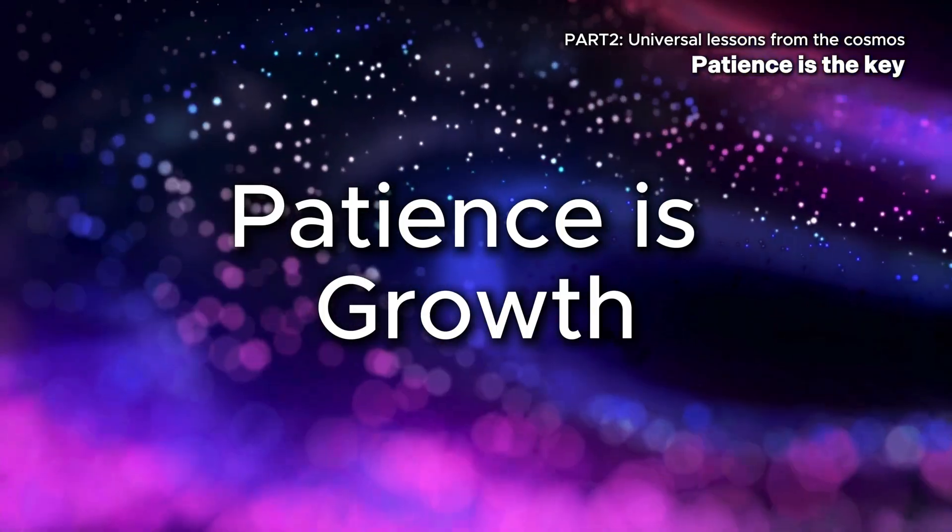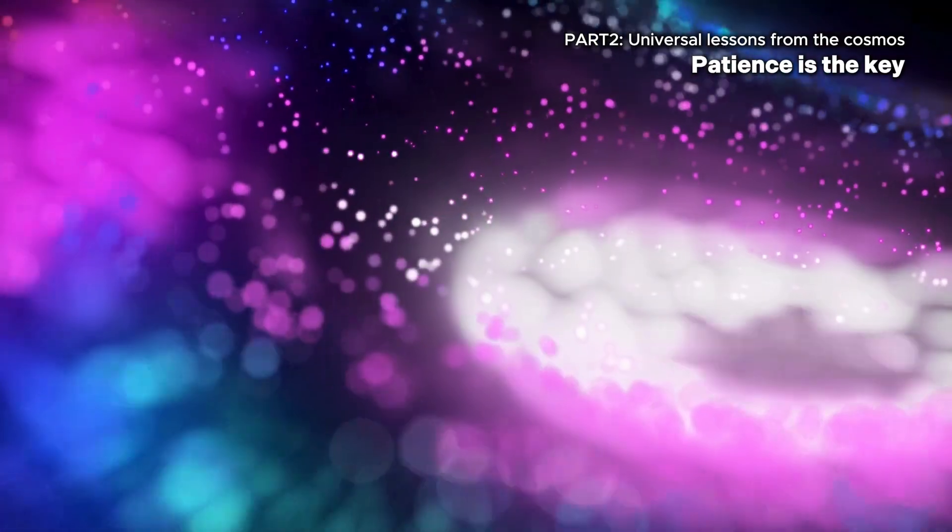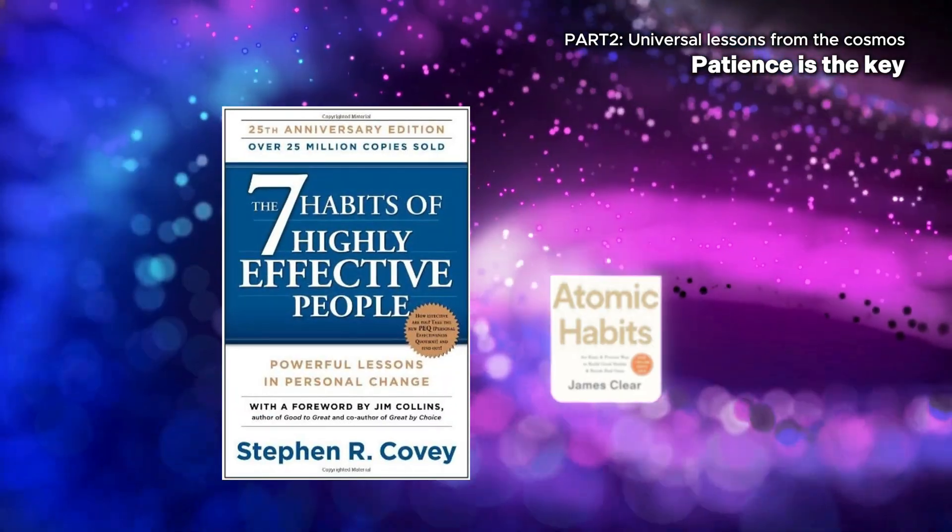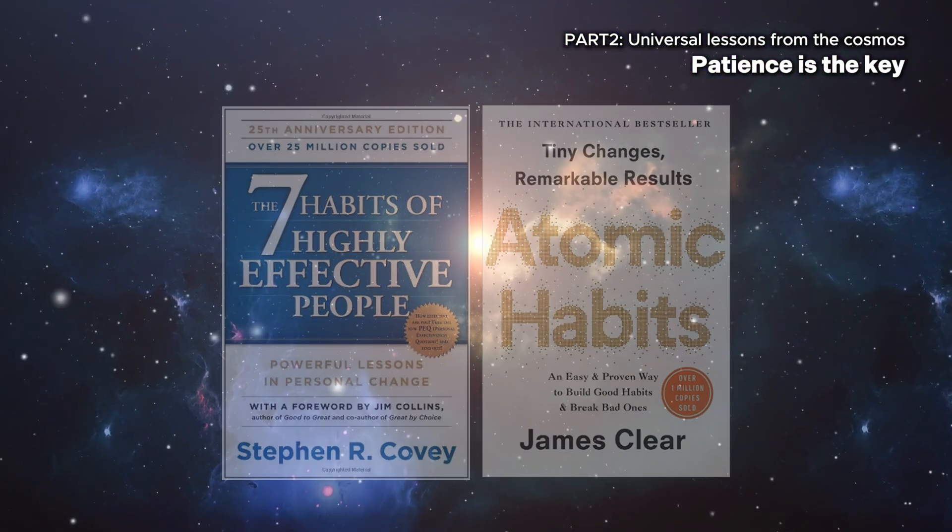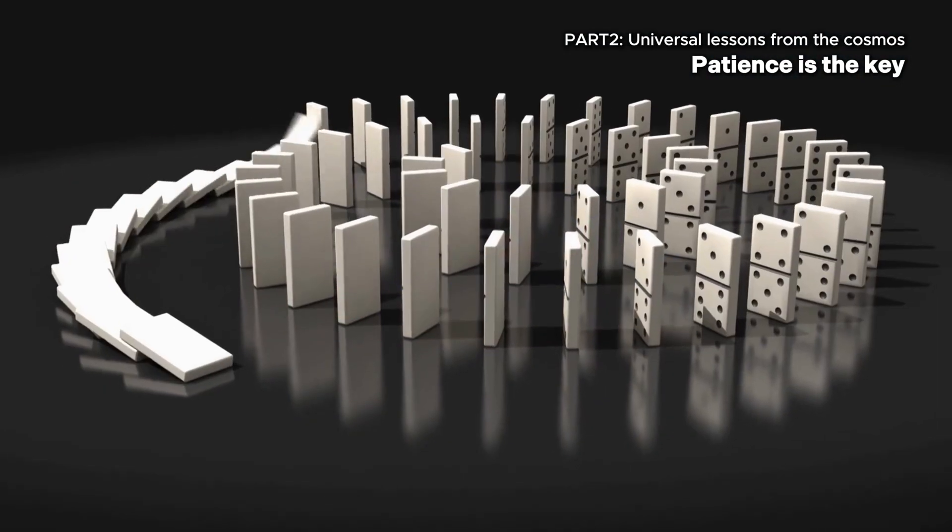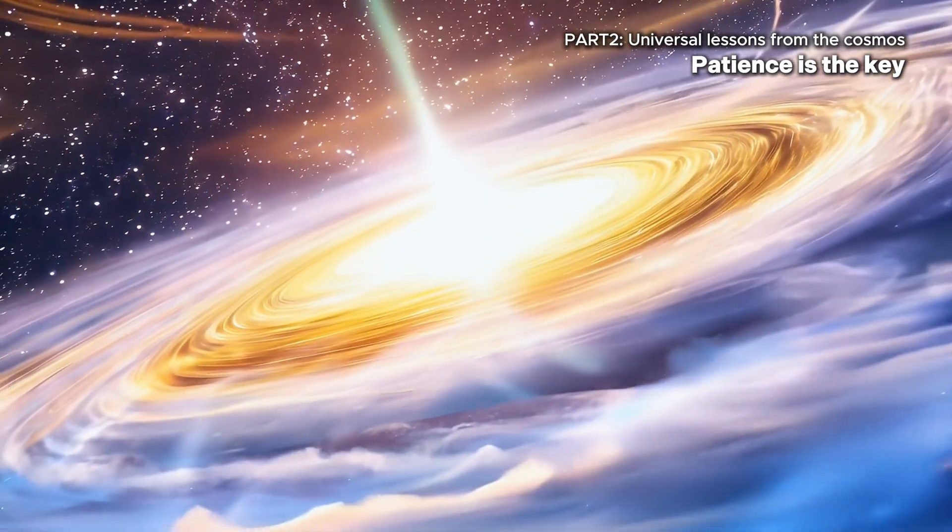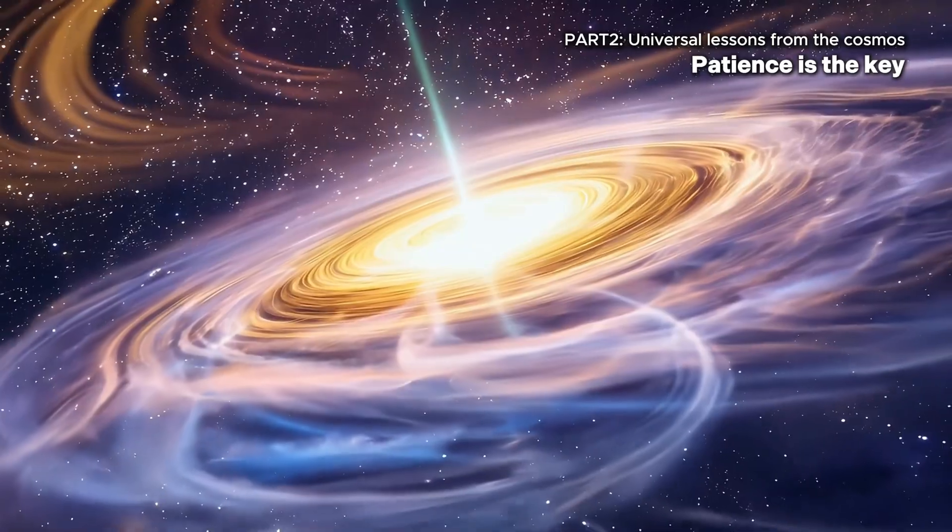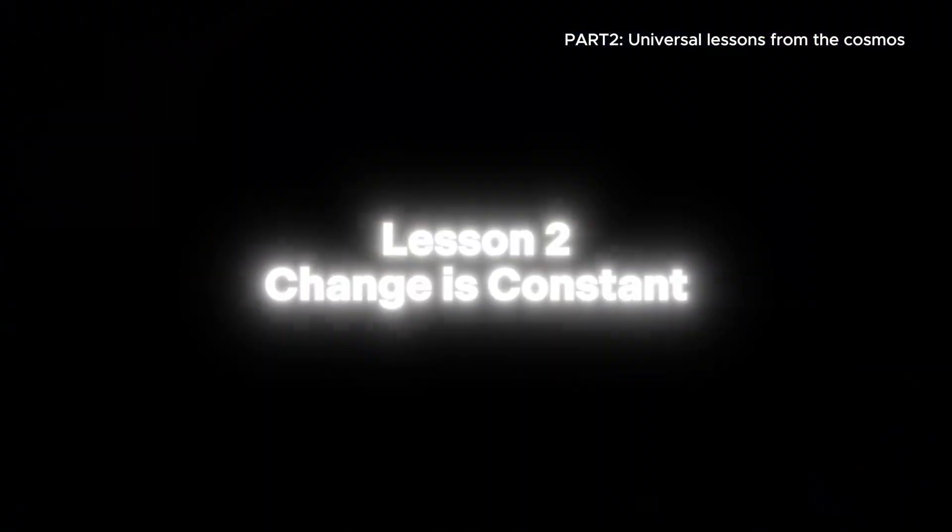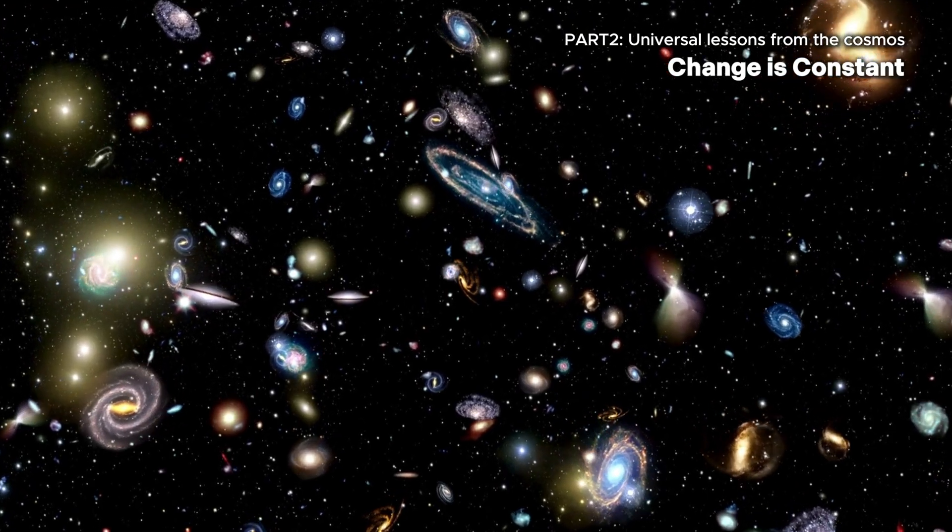The slow and steady rhythm of the universe teaches us that meaningful outcomes require time, consistency, and quiet persistence. Patience after all is the foundation of growth. Countless self-help books and management theories emphasize this, from Stephen Covey's Seven Habits to James Clear's Atomic Habits, but rarely in the context of the cosmos itself. Even modern leadership strategies like the baby step approach echo this universal truth. Small, deliberate actions over time lead to massive results. The universe leads by example, quietly reminding us that slow and steady still wins the race.